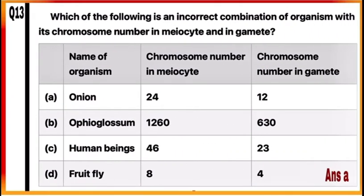Question 13: Which of the following is an incorrect combination of organisms with its chromosome number in meiocyte and in gametes? Out of the four given examples, B, C, and D show correct numbers of chromosomes in meiocyte and gametes. In onion, the number of chromosomes in meiocytes is 16 and in its gametes is 8. So mark A as the correct answer.